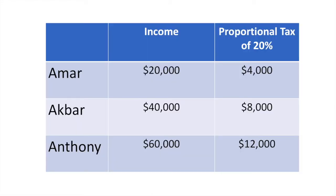Let's look at an example of three brothers — Amr, Akbar and Anthony. They have different incomes but each pay the same percentage of 20% in income tax. It could be argued that the higher income brother pays more in tax but an equal percentage to everyone else. Proponents of such a system state that it simplifies tax payment and collection while at the same time placing a smaller tax burden on those with lower incomes.